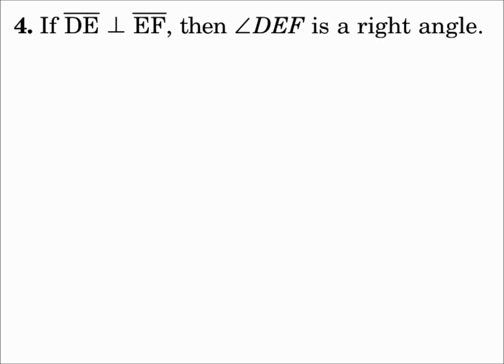Number 4: If segment DE is perpendicular to segment EF, then angle DEF is a right angle. Well, I can draw that. There's segment DE, and it's perpendicular to segment EF by creating a right angle. But remember, perpendicular lines form four right angles. So is it possible for that to happen where angle DEF is not a right angle? And there's just no way. It will always be true.